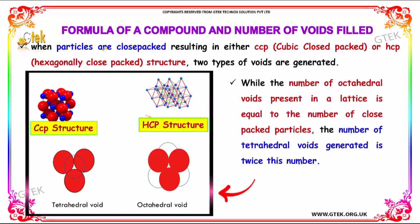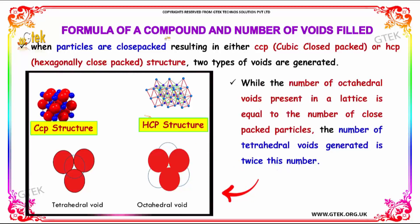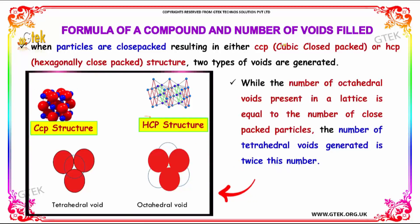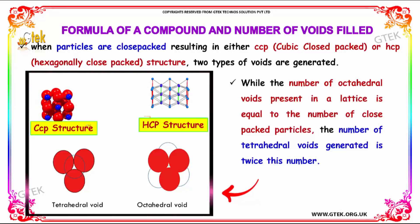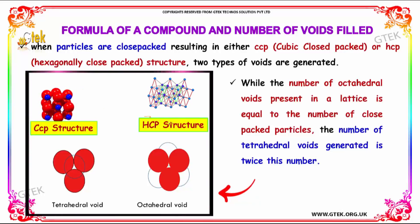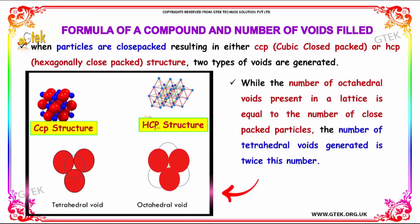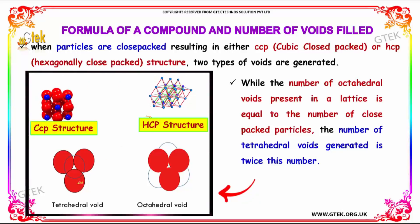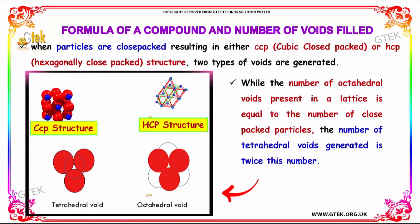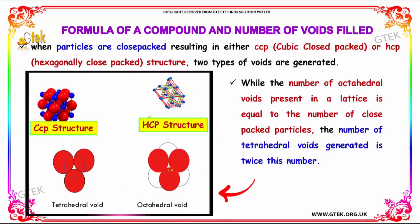Let's talk about the formula of a compound and the number of voids filled. Here is the CCP structure and this is the HCP structure. A typical example of a tetrahedral void, and here is an octahedral void.